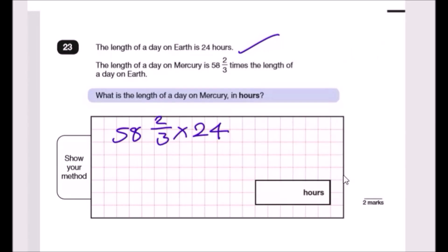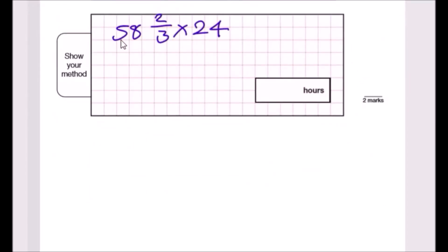The best way to do this is to do this in parts. Let's do 58 times 24 first, and then do 2/3 of 24. I'm going to do the right side first. You can do 2 times 24 and then divide it by 3, or divide by 3 and then times 2. I like dividing first because it's easier. So 24 divided by 3 is 8, 8 times 2 is 16.